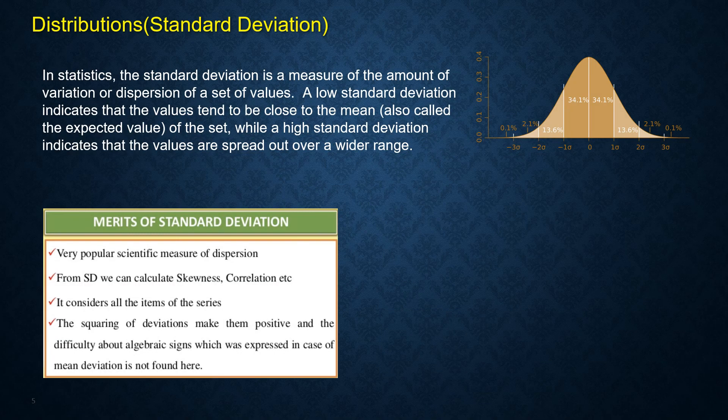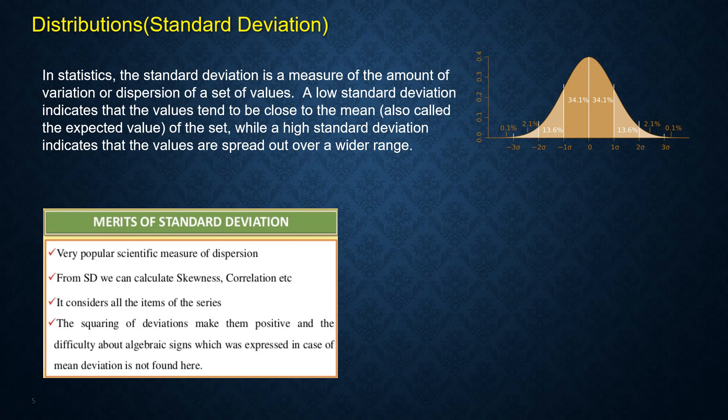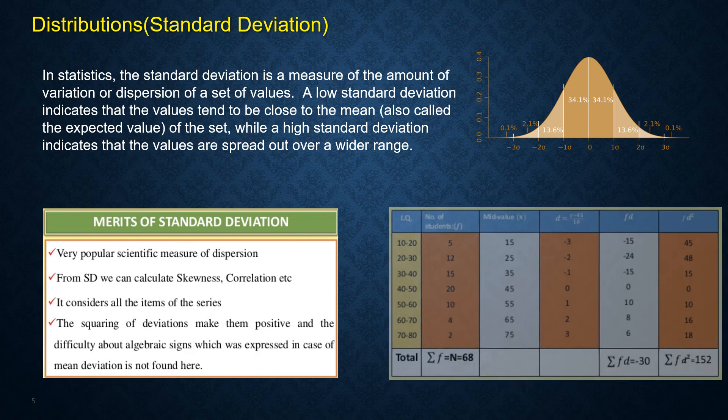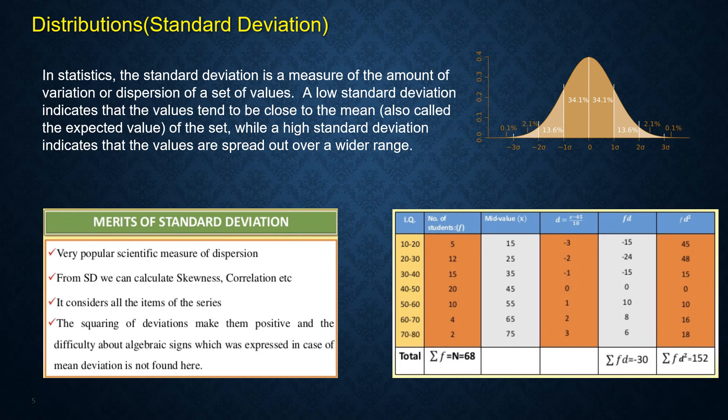How is your data distributed? Remember the distribution of marks by different students that we studied in school. Table shows marks by students, frequency, and fd square. Few students are top performers while few are at the bottom. A majority are distributed in between.